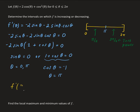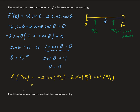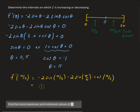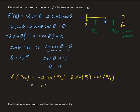Evaluating f prime at π/2: minus 2 times sine of π/2 minus 2 times sine of π/2 times cosine of π/2. Sine π/2 is 1, so the first term gives us minus 2. Cosine π/2 is 0, so the second term is 0. We end up getting negative 2, which is less than 0. So the function is decreasing between 0 and π.